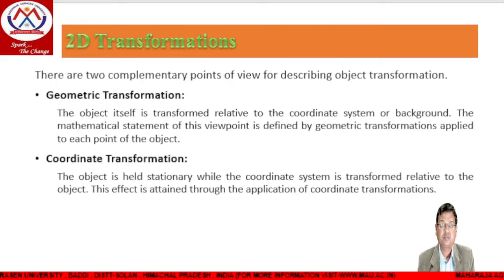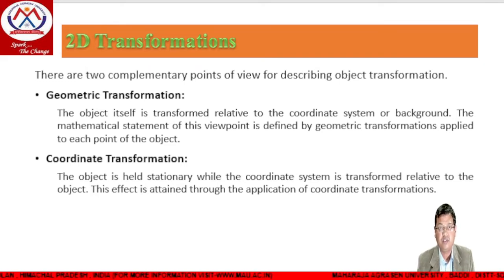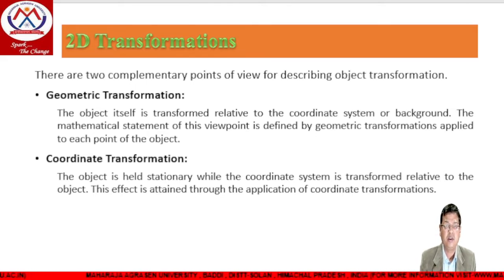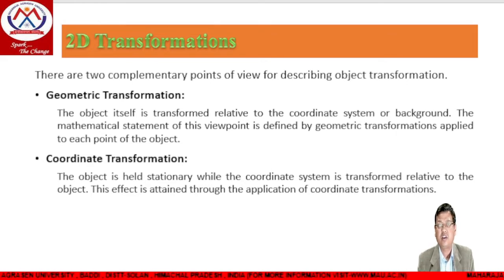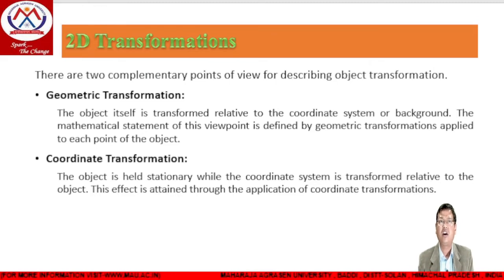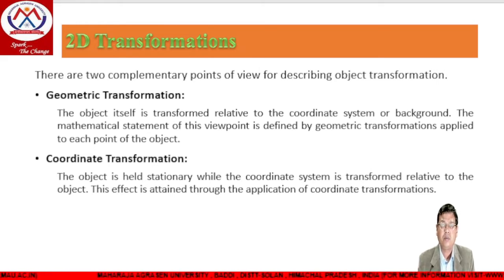We can transform objects in two varieties. First, if we keep the coordinate axis stable and rotate the object, it is called geometric transformation. If we move the background — the coordinate axis — and keep the object stable, it is called coordinate transformation. In geometric transformation, the object itself is transformed relative to the coordinate system, and the mathematical statement is defined by geometrical transformation applied to each point. In coordinate transformation, the object is held stationary and the coordinate system is transformed relative to the object.